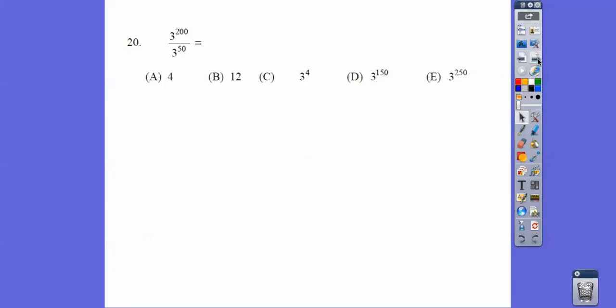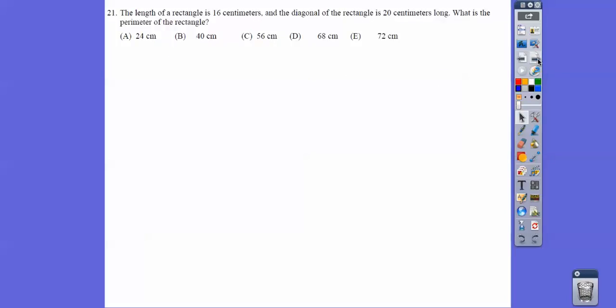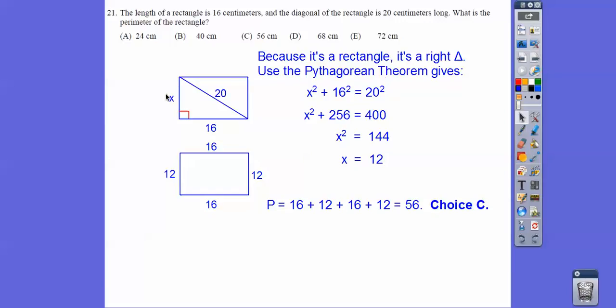All right, so here we can go ahead and subtract those exponents, so we get 3 to the 150th. All right, the length of a rectangle is 16 centimeters, and the diagonal is 20. We're going to use the Pythagorean theorem, because rectangles give us right angles. X squared plus 16 squared equals 20 squared. So we get X equals 12, and the question's asking for the perimeter, so we add them all up, and we get 56.